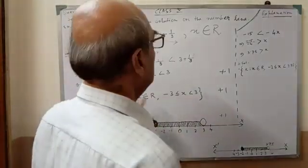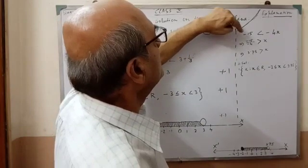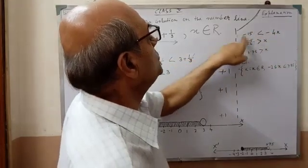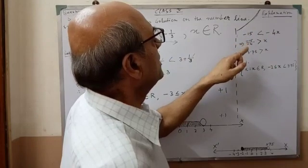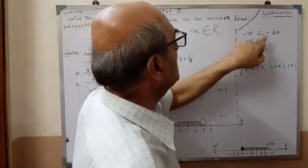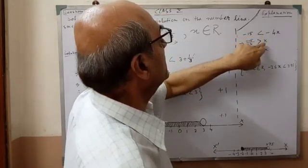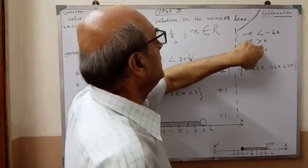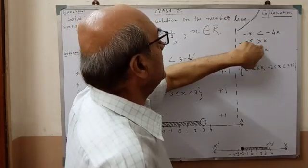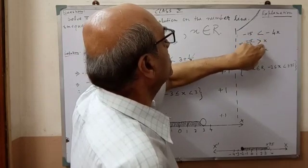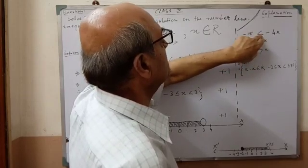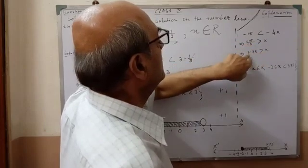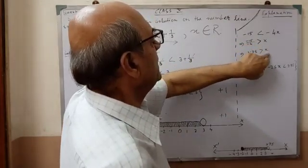Now listen — instead of this, if you are solving the equation and you get minus 15 less than minus 4x, and you see the minus sign is coming on both sides, then the sign of inequality will change to plus. This is the difference between an equation and an inequality. In the case of inequality, the sign of inequality will change. Here, the minus 1 becomes plus, so it will be a greater than sign, giving 3.75 greater than or equal to x.